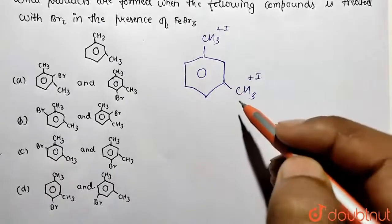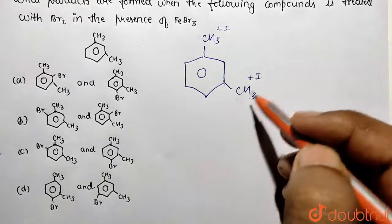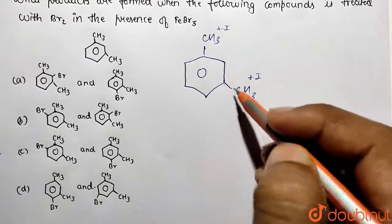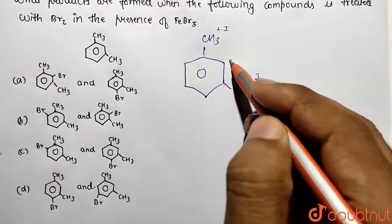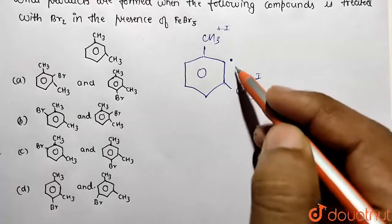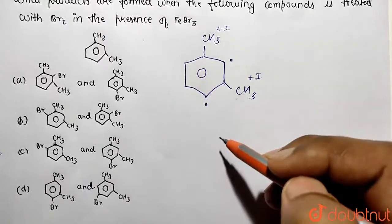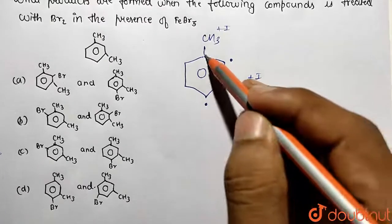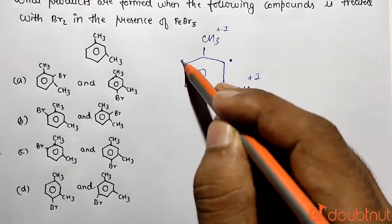These are electron donating or we can call them they are increasing density by plus I effect. They are activating groups, not deactivating. So ortho and para directing groups are going to increase density at corresponding ortho position as well as on the para position. With respect to this one, this is ortho position and this is the para position.